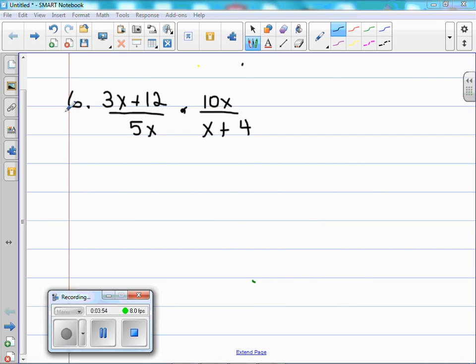This is number 6. You see I have it written here, and we're going to look at it and see what can we factor out first. Let's look at one portion at a time, just this part here. Can we factor anything out of this part? Yes, it looks like we can factor out a 3. So we factored out the 3, and now we have 3 parenthesis x plus 4 over 5x. Since we're multiplying this, I'm just going to rewrite the other term beside it. I'm just going to rewrite the 10x over x plus 4.